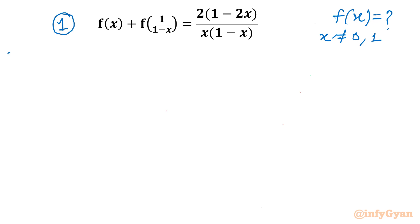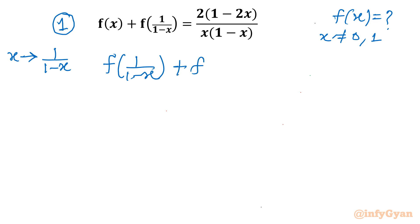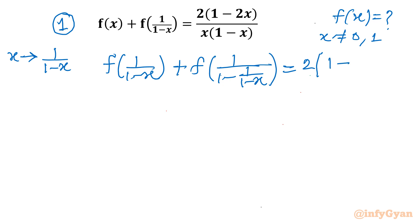I will use the first operation: replacement. I will replace the variable x with 1/(1-x). Once I do that, I will get the left-hand side as f(1/(1-x)) + f(1/(1 - 1/(1-x))). The RHS will be 2(1 - 2/(1-x)) divided by (1/(1-x))(1 - 1/(1-x)).